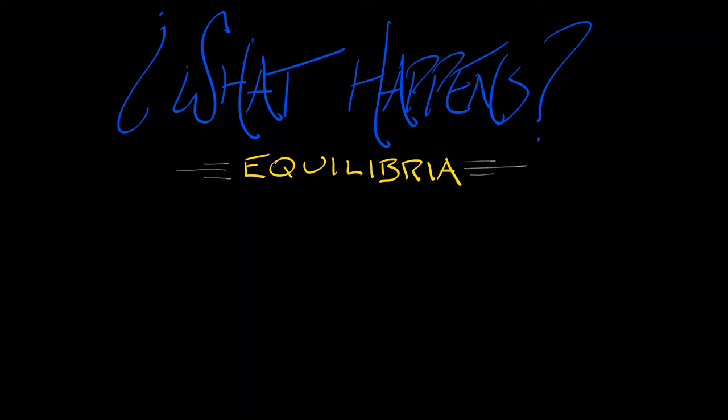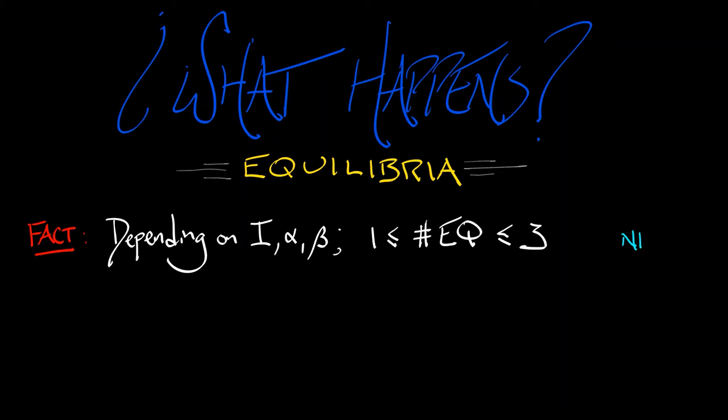equilibria. And the fact is, depending on these parameters, I, alpha, beta, you always have between one and three equilibria. That's it. Those are your choices. That's nice. And you could solve for where those are. Have fun doing that. What comes next? Oh, of course, bifurcations, because if we change the number of equilibria, we've definitely got some bifurcations going on.